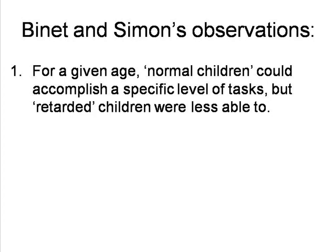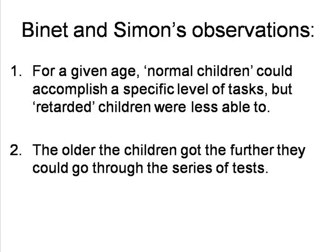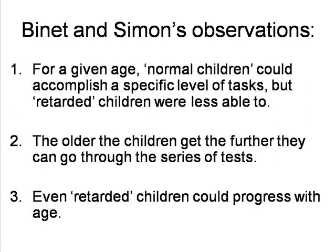Binet and Simon made three important observations. First, at each age, normal children could satisfactorily answer questions and accomplish tasks up to a certain point, but the retarded children were less able to. Second, the older the children were, the further they could go through the series of tests — so the tests were a measuring device of child development, such that an individual child's performance could be compared with the average performance of children of their age. The performance of the retarded children also progressed with age, but they still lagged behind the normal children. In general, the work of Binet and Simon showed that intelligence could be measured by cognitive tasks accomplished by age, and that the extent of retardation and excellence could be measured in years.